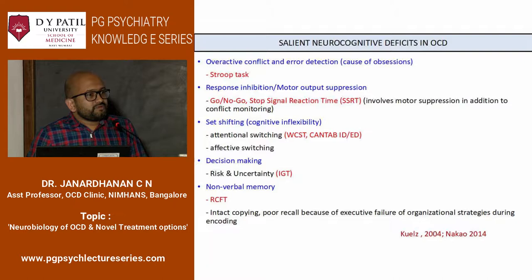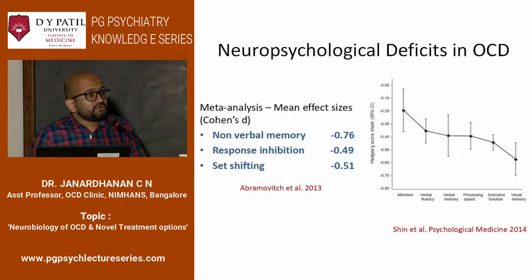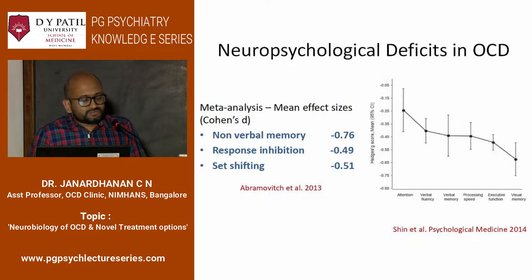Looking at meta-analyses to see whether all these functions are uniformly affected across various studies — when you look at effect sizes of which cognitive deficit has greater impairment — non-verbal memory seems to have a really high effect size. For response inhibition and set-shifting also it seems quite high. An effect size of 0.5 is considered a good effect size, something that really stands out. So these three cognitive deficits are important to remember.